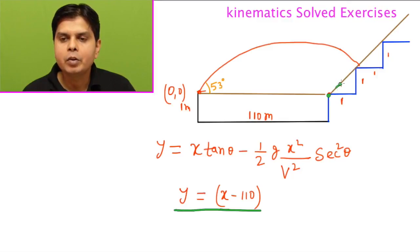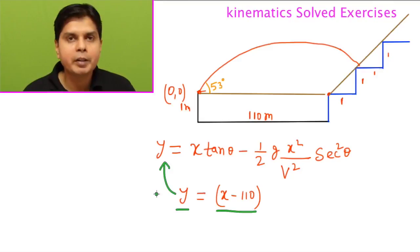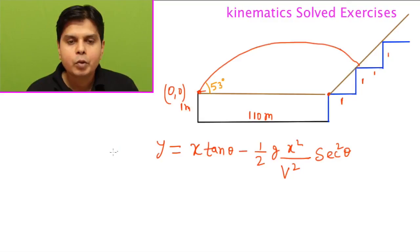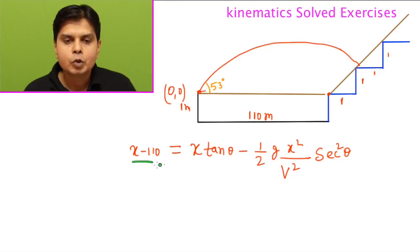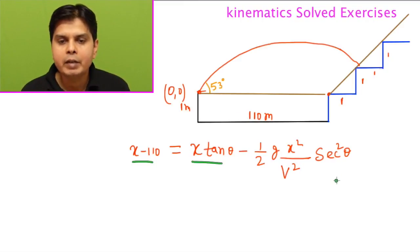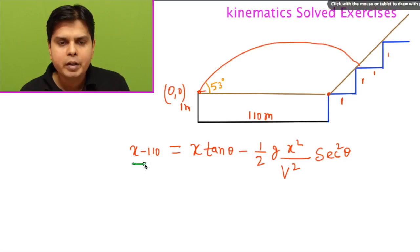Substitute this equation of the line, you'll get a quadratic equation in x. When you solve for x, you'll find where the ball and this line intersect. So x minus 110 equals y, which equals x tan θ minus half g x squared by v squared sec squared θ. Everything is known - tan 53 is 4 by 3, sec squared 53 - everything is known except x.